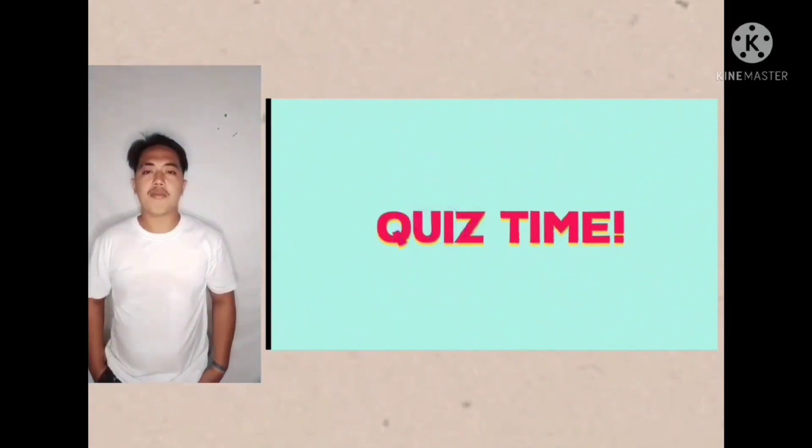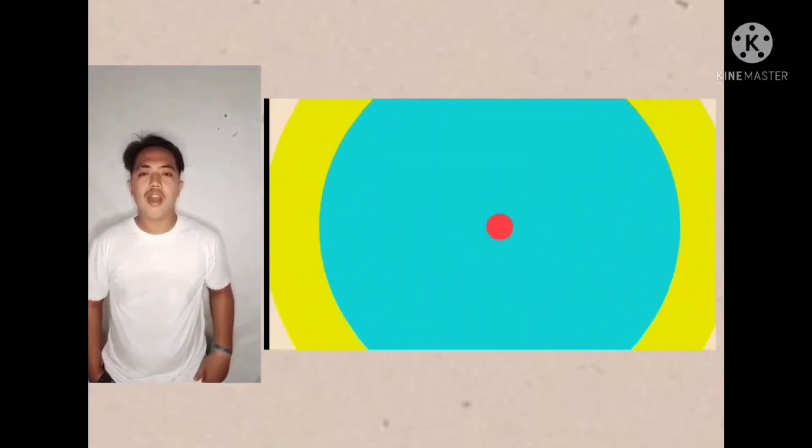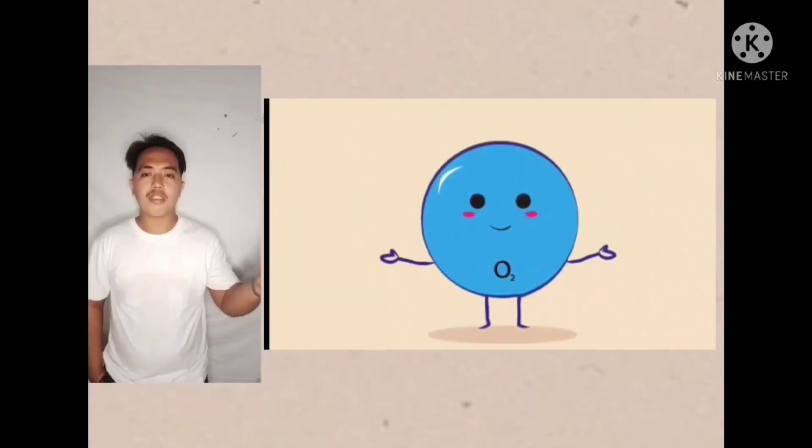It's quiz time! Can you identify what states of matter these objects are in and what their characteristics are? Cookie, ketchup, and oxygen.